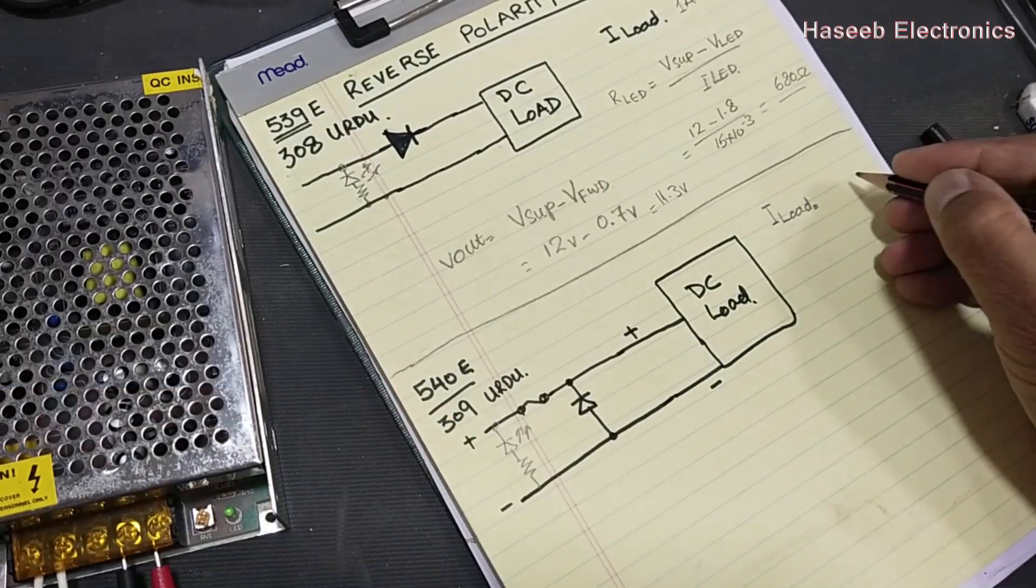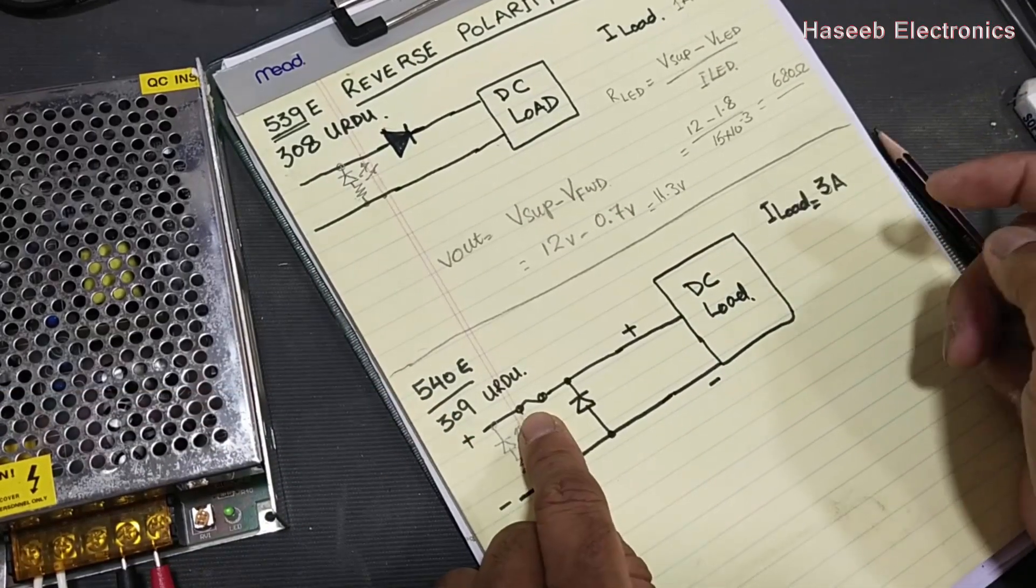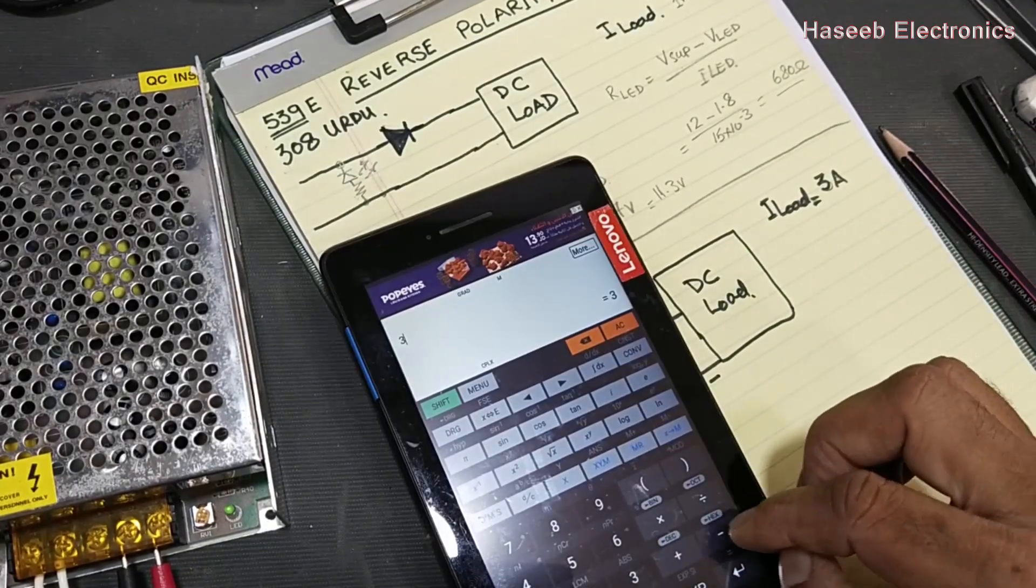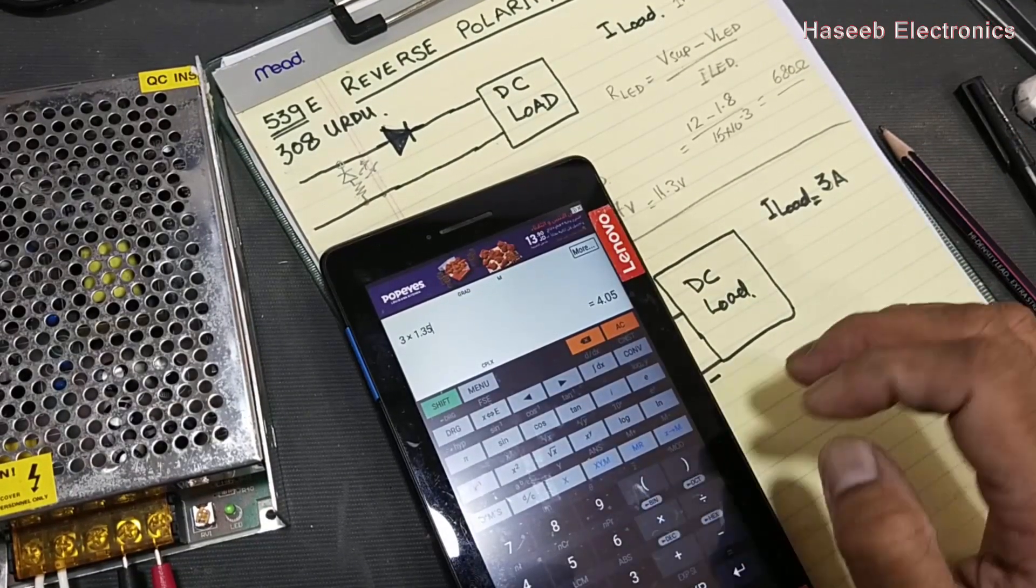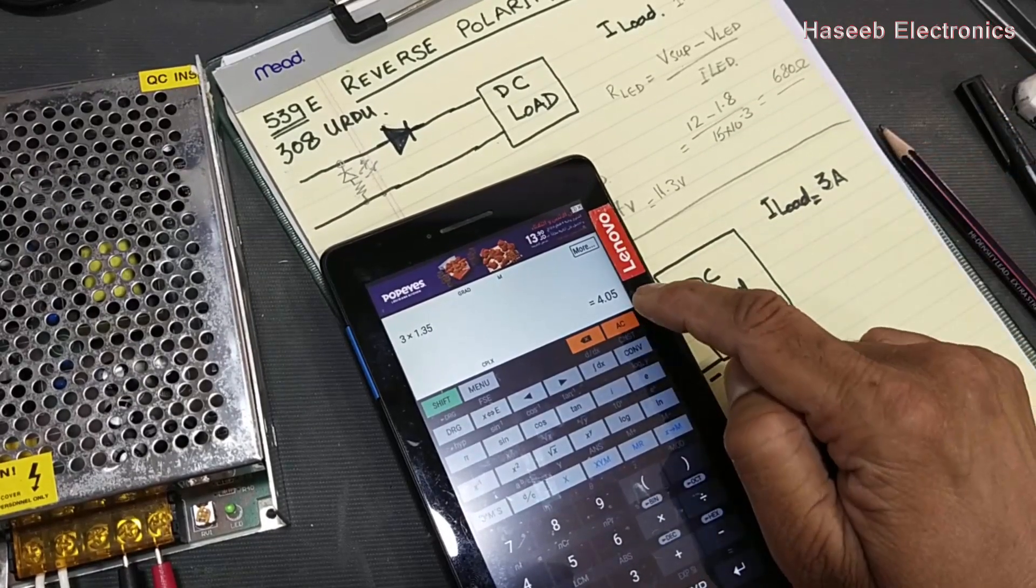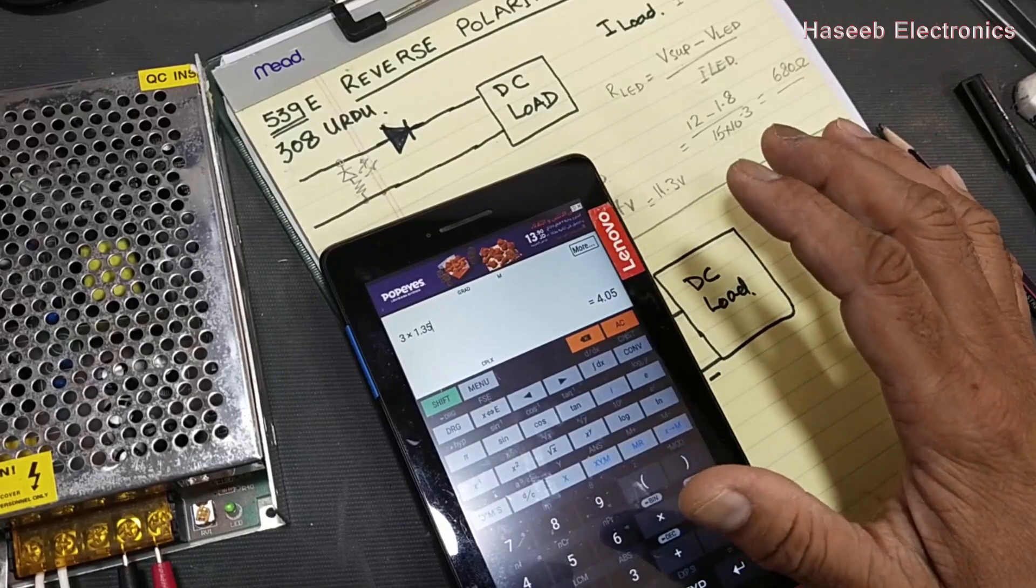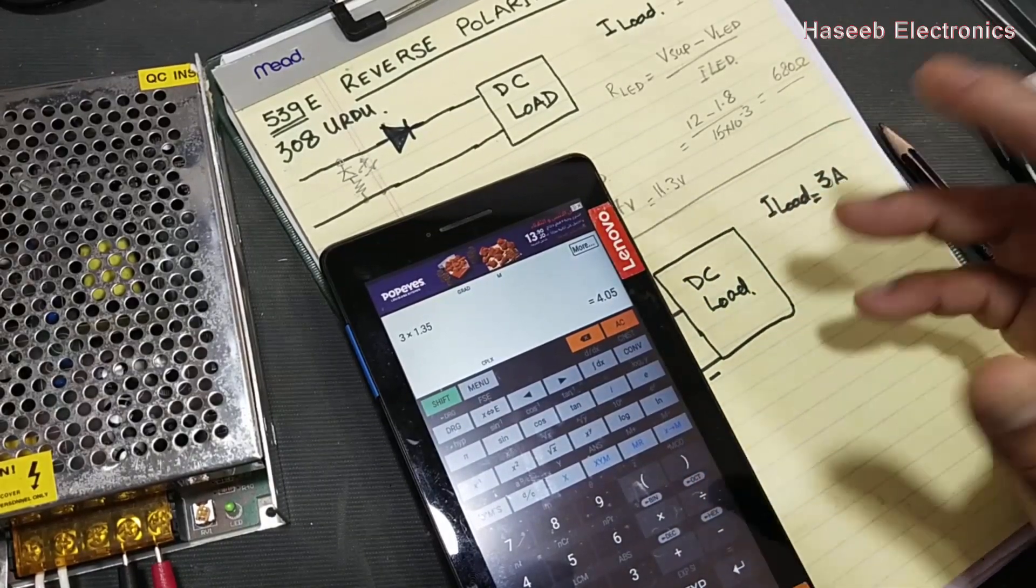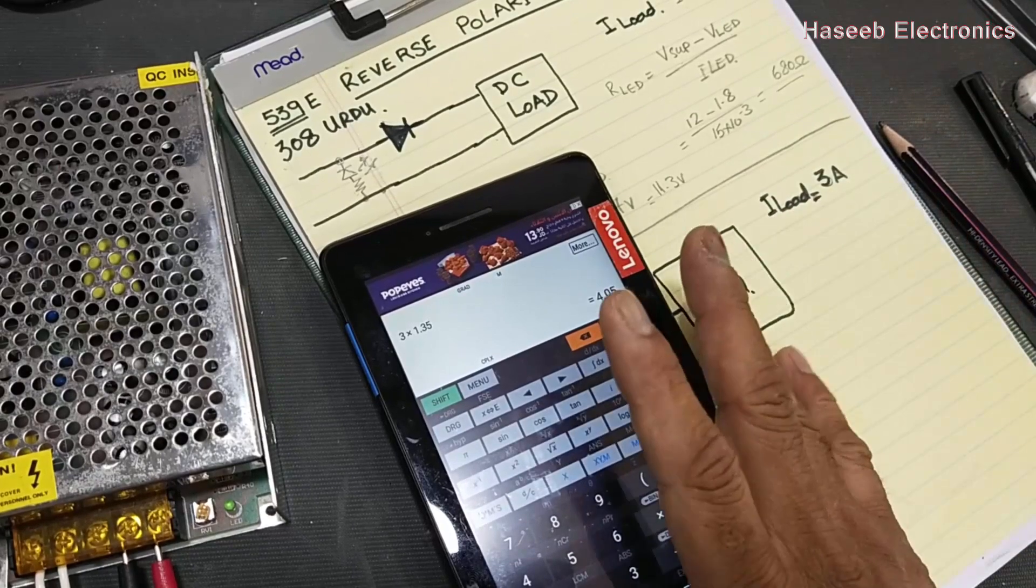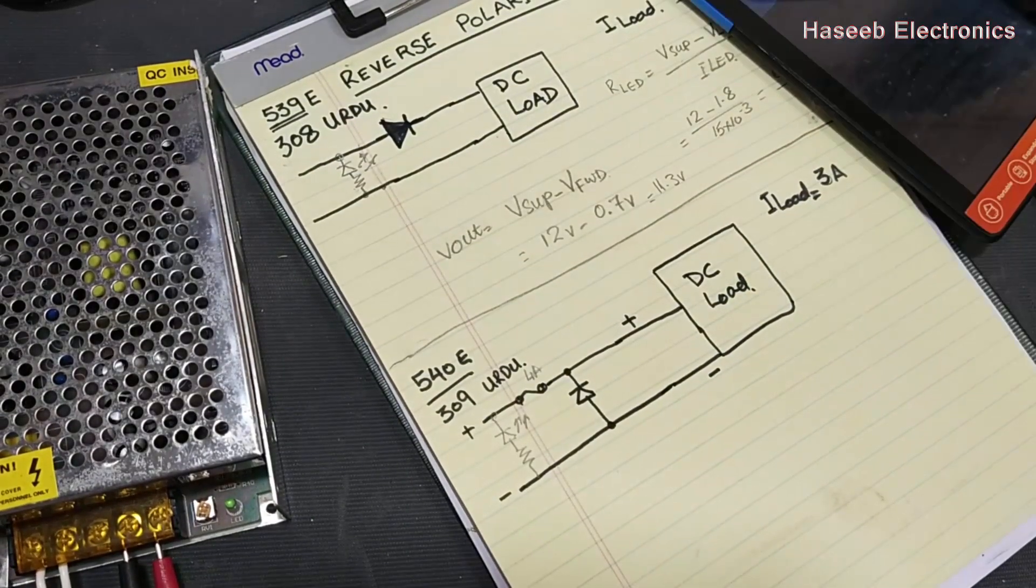We have to understand some points here. First, we have to determine the load current. For example, our load is working at 3 amperes. That means the fuse will be around 3 multiplied by 1.35, because the fuse has to work at approximately 70% value. So we can say 4 ampere fuse, without the other factors. It is just rough calculation.